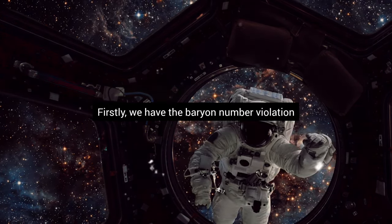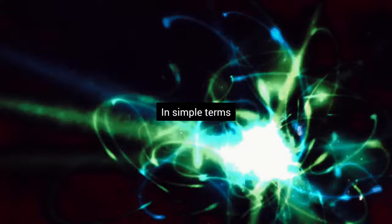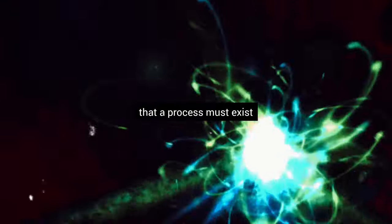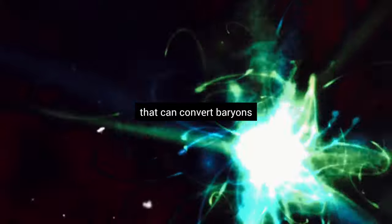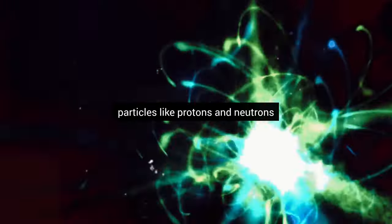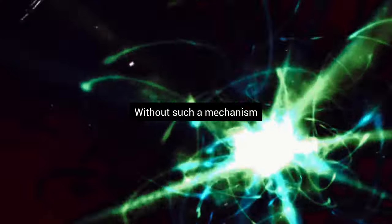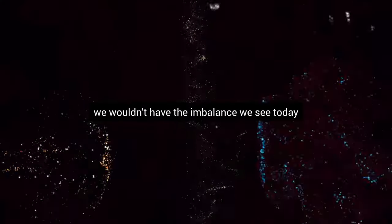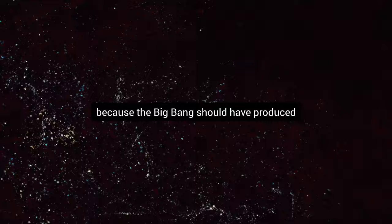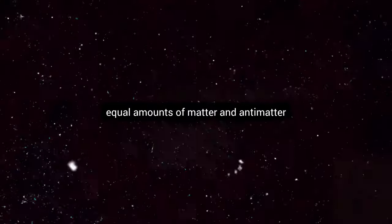Firstly, we have the baryon number violation. In simple terms, this condition states that a process must exist that can convert baryons—particles like protons and neutrons—into their antiparticles and vice versa. Without such a mechanism, we wouldn't have the imbalance we see today, because the Big Bang should have produced equal amounts of matter and antimatter.